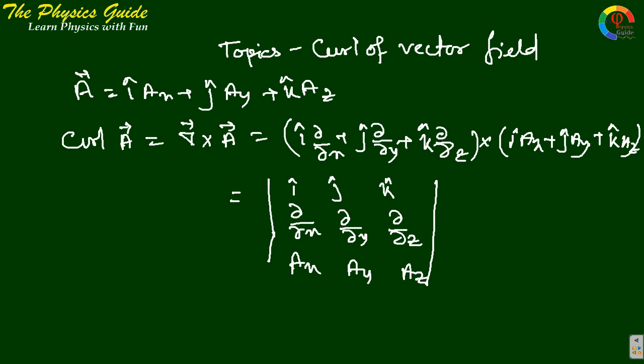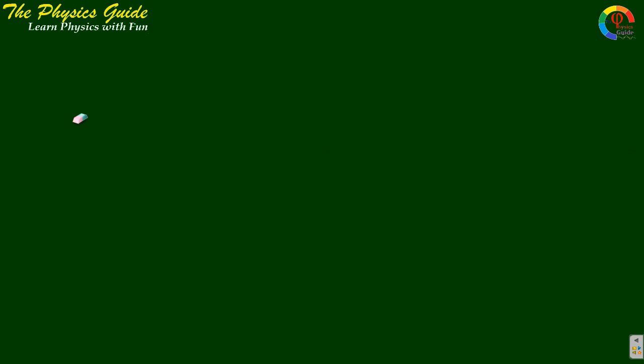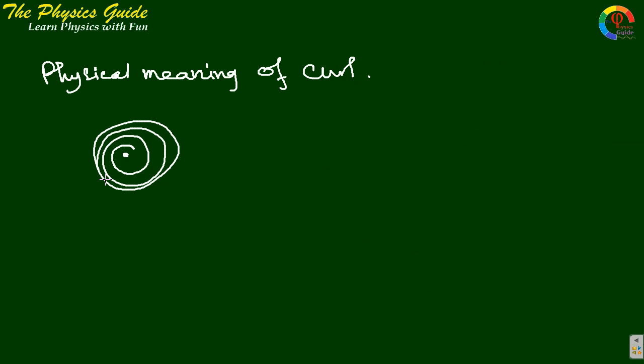Now we are going to express the physical meaning of curl. Suppose there is a cyclone source center and the air or water around this are revolving, so the velocity of the air is changing and rotating around. Physical meaning means curl is a measure of how much a vector curls around a point in question.